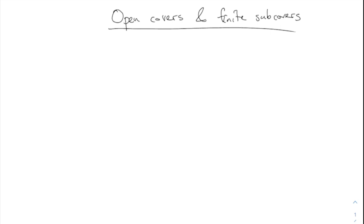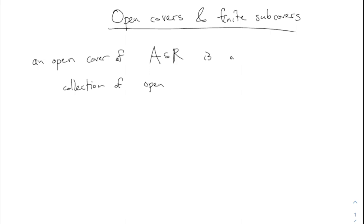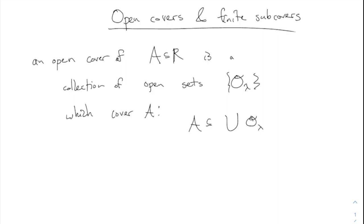Open covers and finite subcovers. Remember, an open cover of a set — an open cover of some set A is a collection of open sets, say O-lambda, which cover A. By which I mean A is a subset of the union of all these open sets. It is a collection of open sets which cover the original set in the sense that A is a subset of their union.